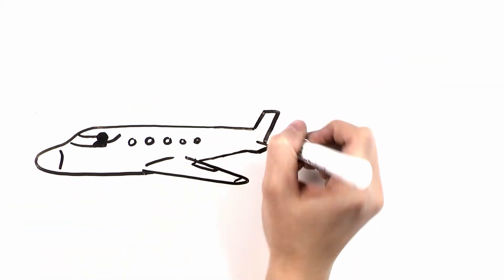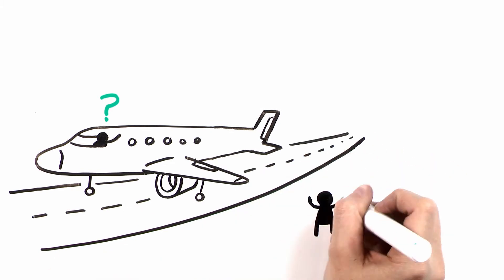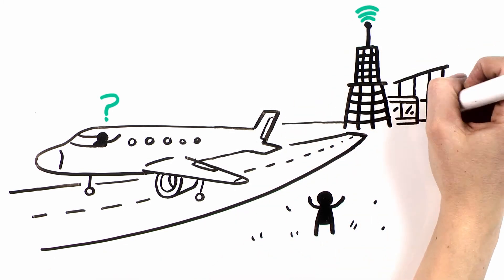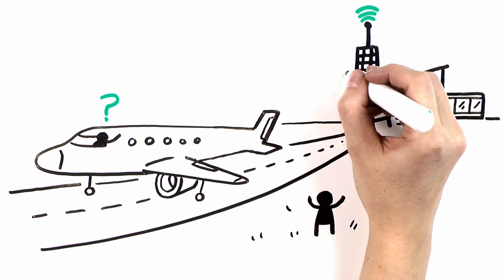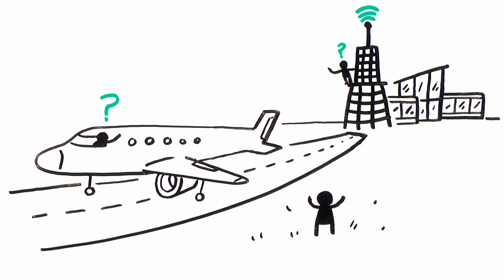Imagine how much slower and less reliable air traffic control would be if they depended solely on humans to radio information from the runway to the tower. Automation leads to efficiency.